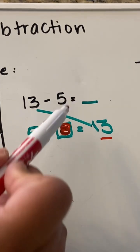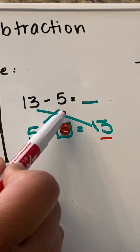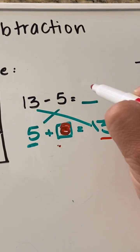And then bringing it back up here, 13 minus 5 is our answer, 8. And we're going to repeat.